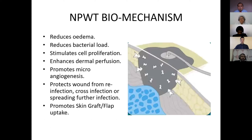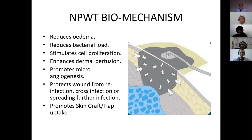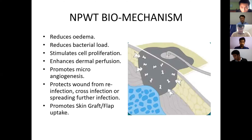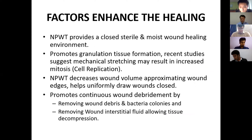Regarding the biomechanism: it reduces edema and bacterial load, subsequently stimulating cell proliferation. Cell proliferation is mainly dependent upon dermal perfusion. The blood supply to the wound is enhanced by negative pressure wound therapy, which promotes microangiogenesis. It also protects the wound from reinfection, cross infection, and spreading infection. Finally, after achieving good granulation tissue, the wound is available for skin graft or flap coverage.